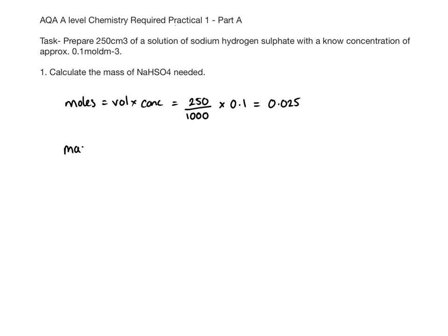To work out the mass, use moles times Mr. Work out the Mr using the periodic table. Remember, all masses on the periodic table are to one decimal place, so your mass should be to one decimal place also. The moles were 0.025 times the Mr, which means we need to weigh out 3.0025 grams.